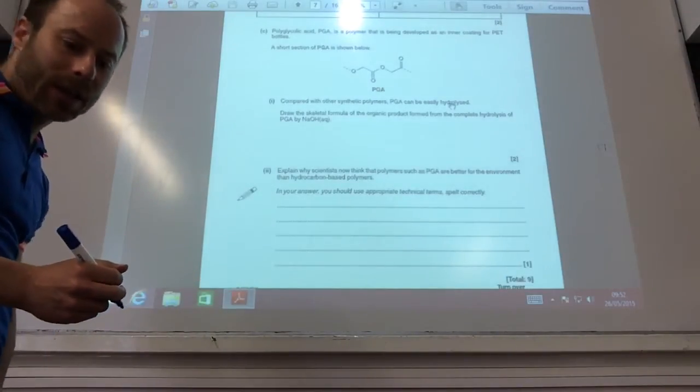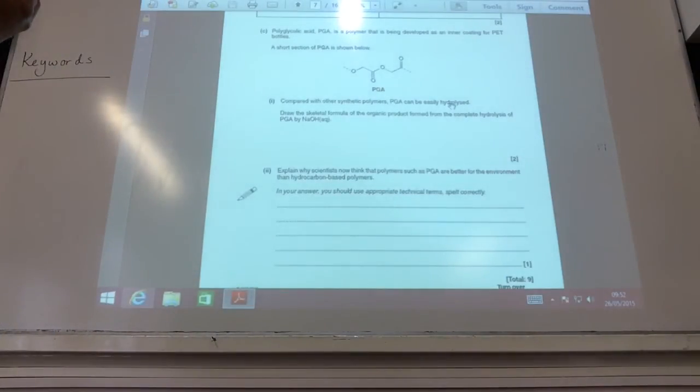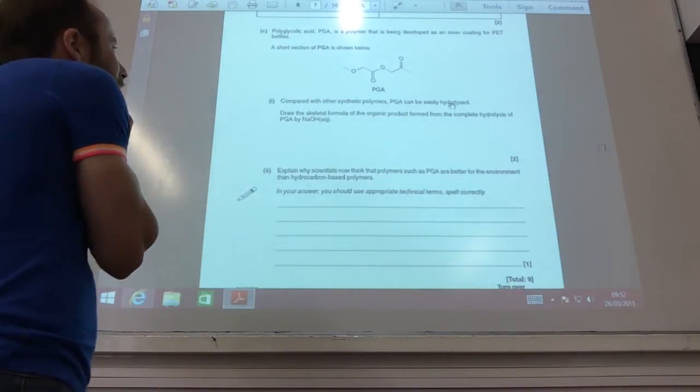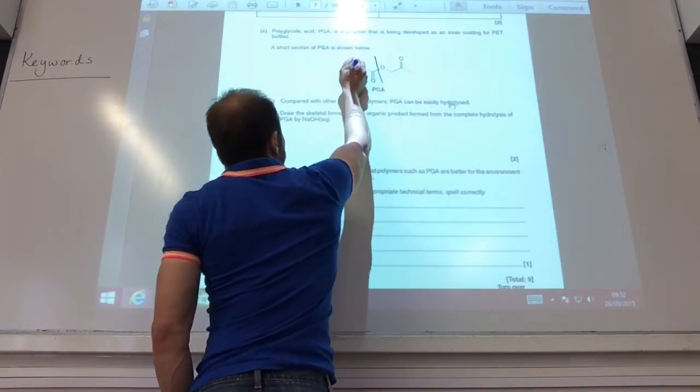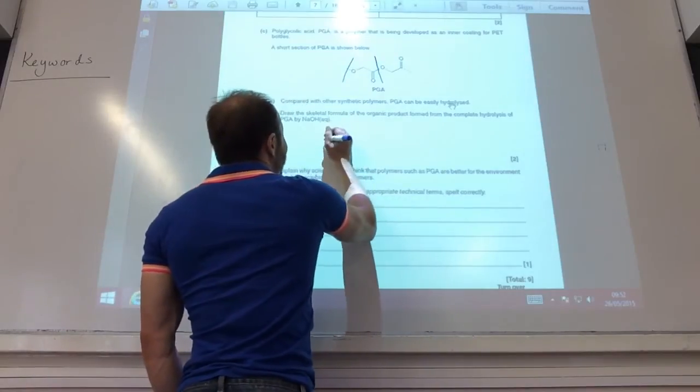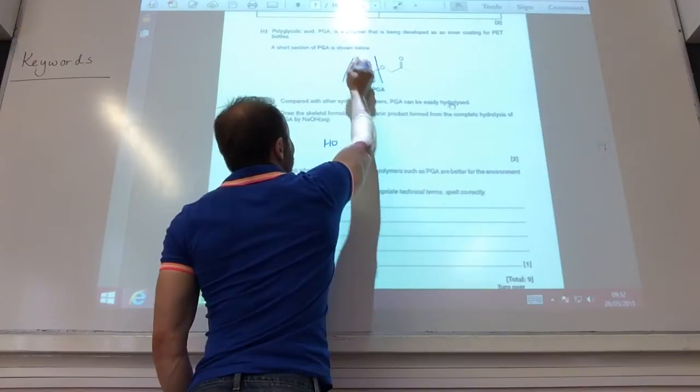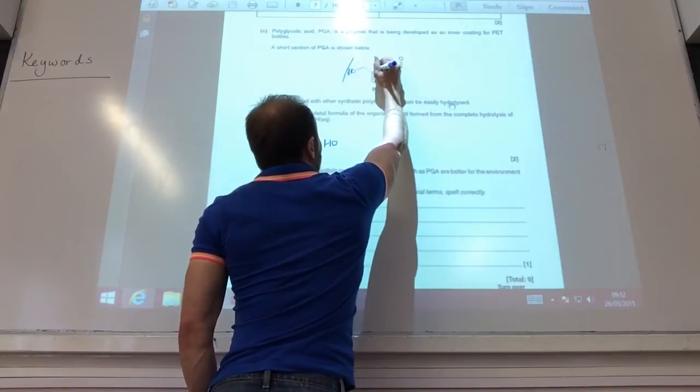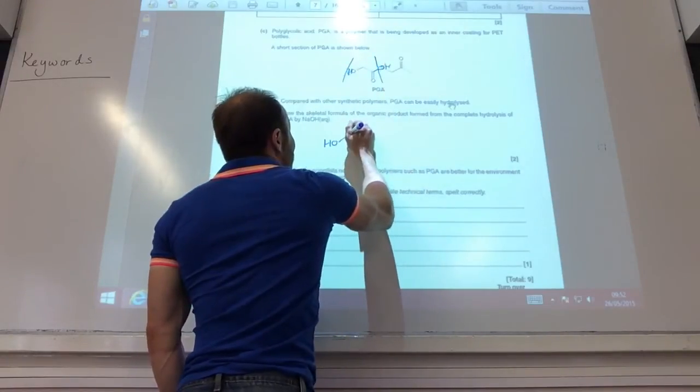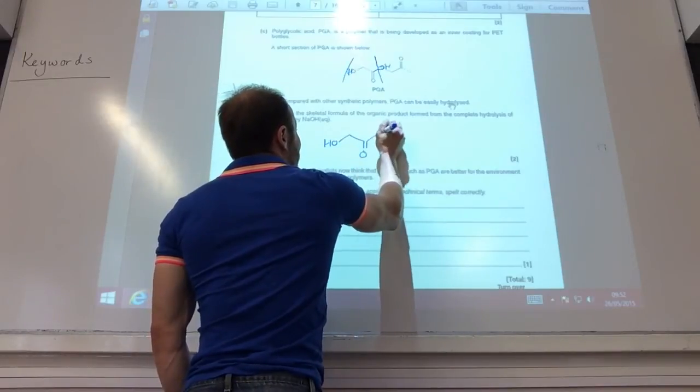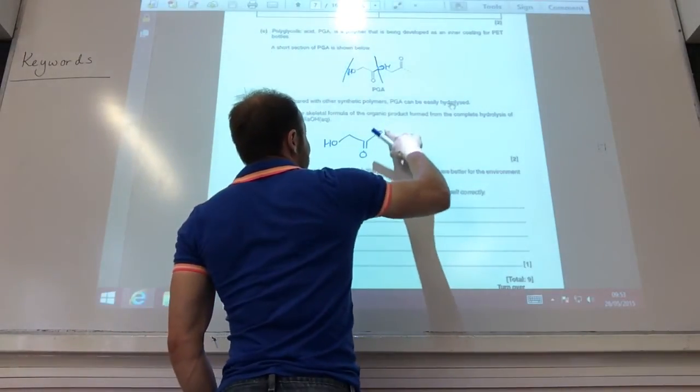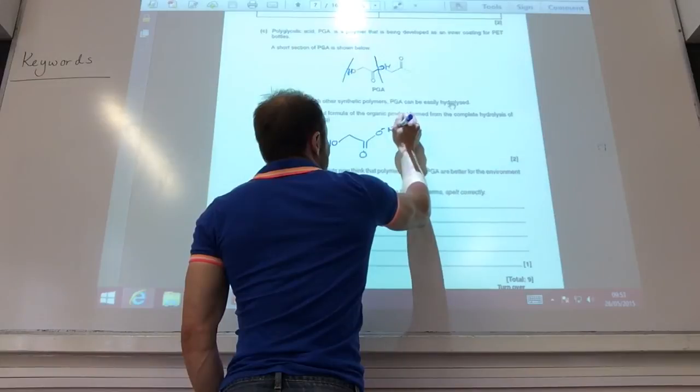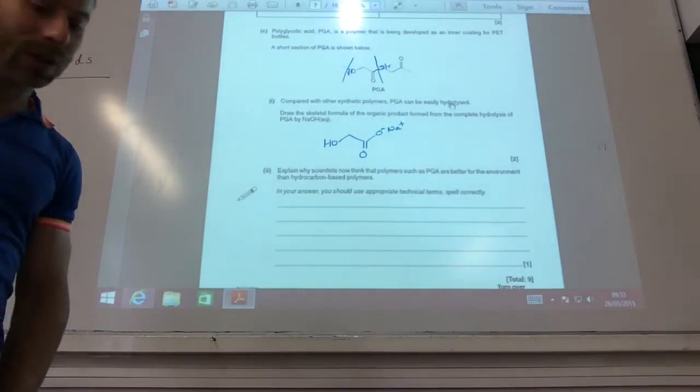Oh right, okay. I'm now PGA. Polyglycolic acid being developed. Blah-de-blah-de-blah. Complete hydrolysis. So again, there are my esters. So skeletal, I'm going to put an H there. And that's going to become an OH there. Bang, bang, like so. But, it's in sodium hydroxide solution. So it's going to be that one there.